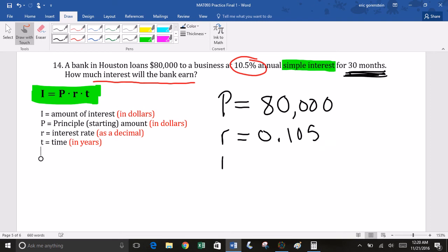And our time, well, that has to be converted to years. Every 12 months is a year. So 30, we'll divide that by 12. So that's two and a half years. Two years is 24 months, and the other six months would be half a year.